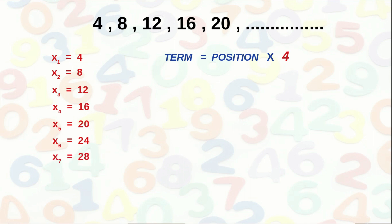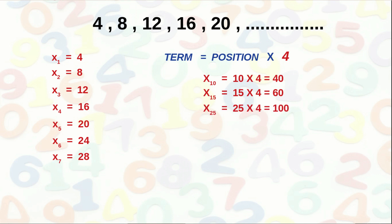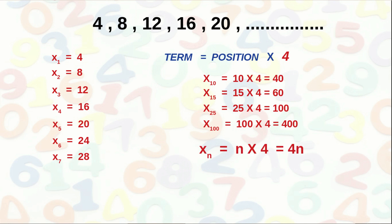The 7th term x7 is 7 × 4 = 28. The 10th term x10 = 10 × 4 = 40. The 15th term = 15 × 4 = 60. The 25th term x25 = 25 × 4 = 100. The 100th term = 100 × 4 = 400. In general, the nth term is n × 4 = 4n. So xn = 4n is called the algebraic expression of this number sequence.